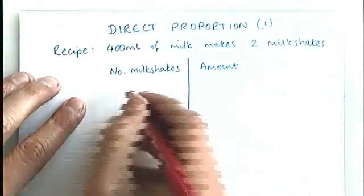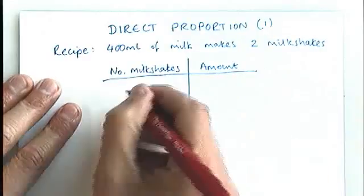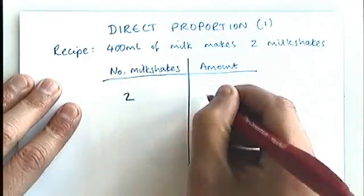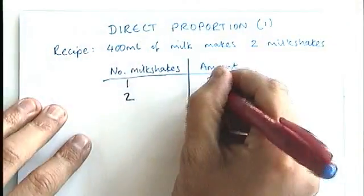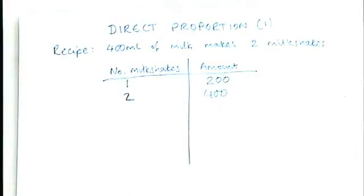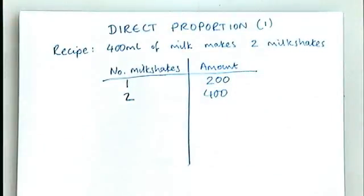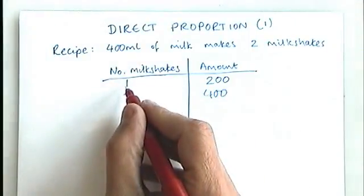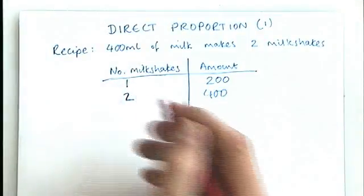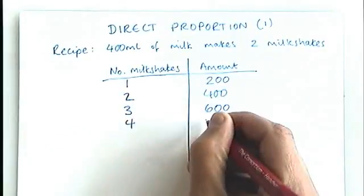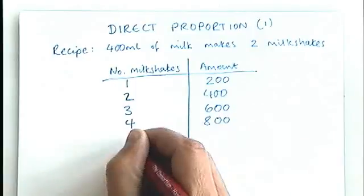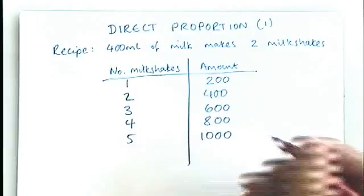And it would be quite easy, you can see quite quickly, two milkshakes is 400 milliliters of milk. It would be quite easy and quite simple to start filling in other values in this table. For example, you could half the recipe, you could make one milkshake which would require 200 milliliters of milk. You could make three milkshakes, so if you did the recipe for one milkshake and two milkshakes, three milkshakes would be 600 milliliters. Four milkshakes would be 800 milliliters, and five milkshakes would be 1,000 milliliters of milk.